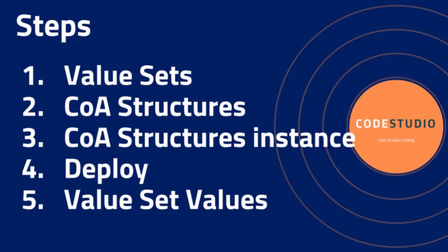The chart of account instances are actually exposed in the user interface and processes. All chart of account instances inherit the same attributes as their corresponding chart of account structure, meaning the instances will share a common shape and have the same segments in the same order as defined in the structure. However, there is a difference: we can override the default value set assignments at the instance level, and you can choose to generate a new account combination dynamically or manually at the chart of account instance level.